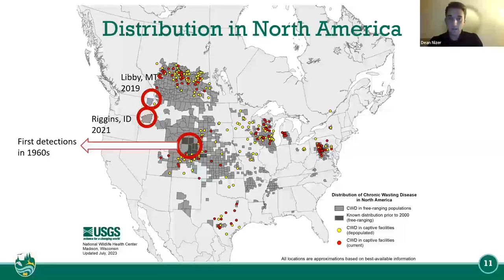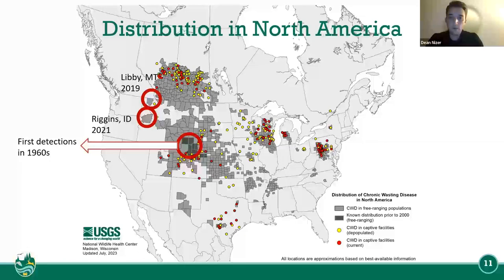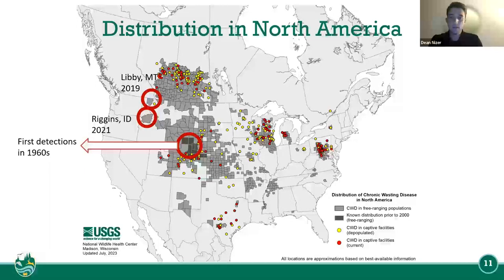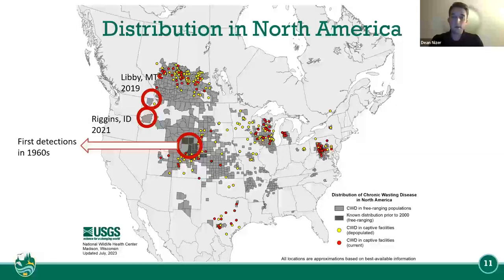On this map you can see CWD in free-ranging populations in lighter gray, the known distribution prior to 2000 in darker gray, CWD in captive facilities such as farms in yellow, and CWD in captive facilities currently in red.